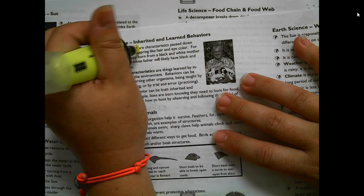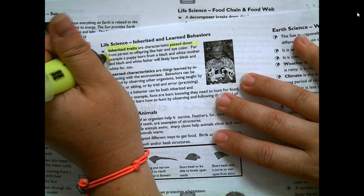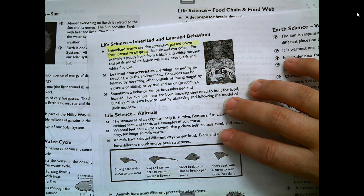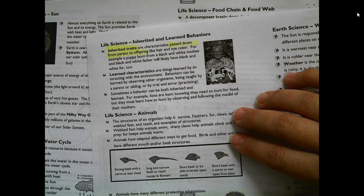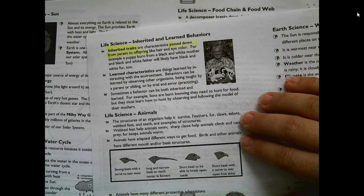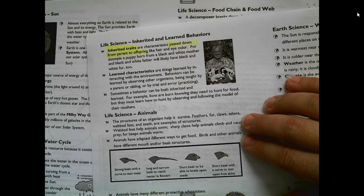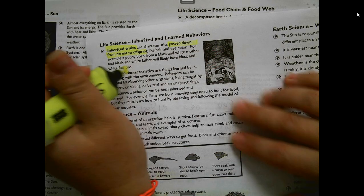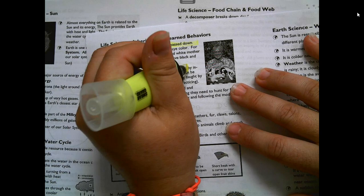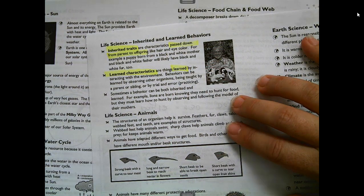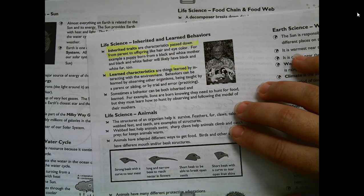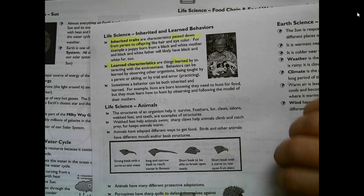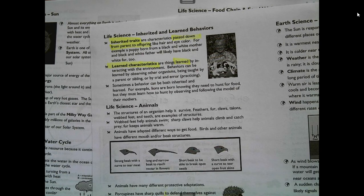Inherited traits are things passed down from a parent — hair color, eye color, the shape of a plant's leaves. Learned traits are things you have to learn by interacting with your environment, by observing other organisms. If I tell a dog to sit, that's not something it was born knowing how to do — it had to learn that.